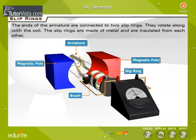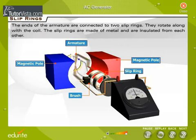Slip rings: The ends of the armature are connected to two slip rings. They rotate along with the coil. The slip rings are made of metal and are insulated from each other.